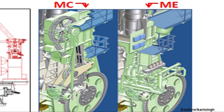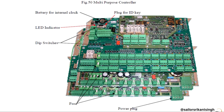We'll see in later videos about these components, but these are the key differences we can point out between MC and ME engines. These are the electronic cards which are used in marine electronic engines, and there will be many cards for each unit which will be performing all the operations.